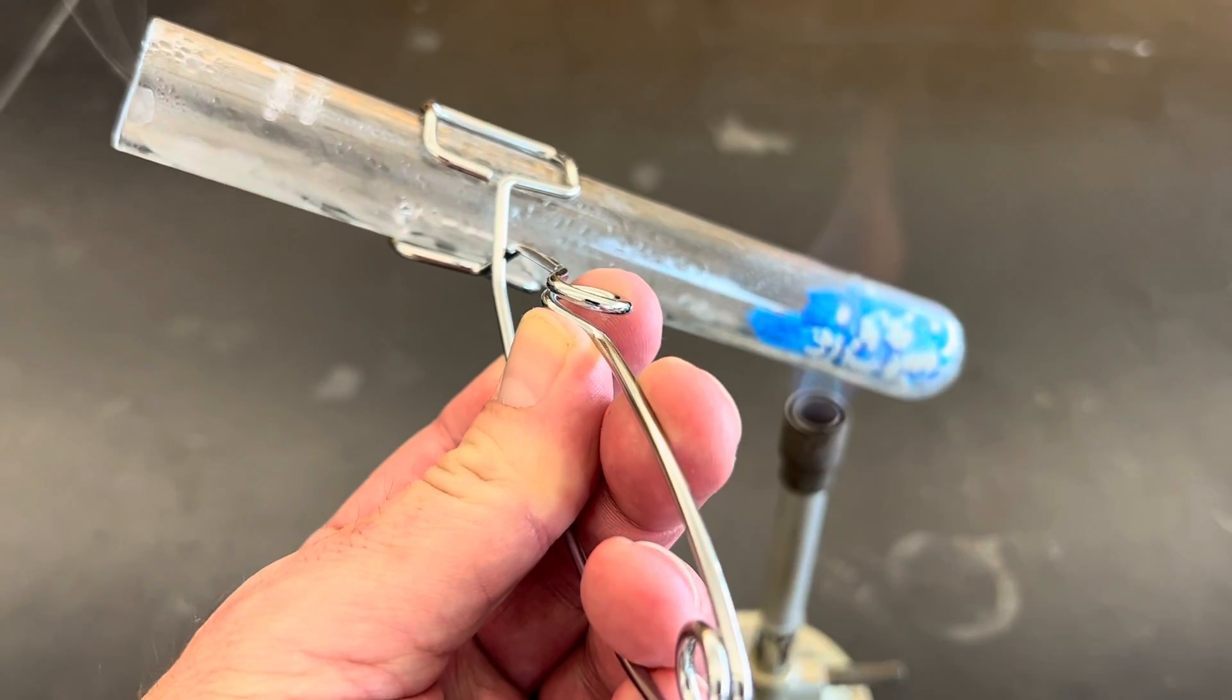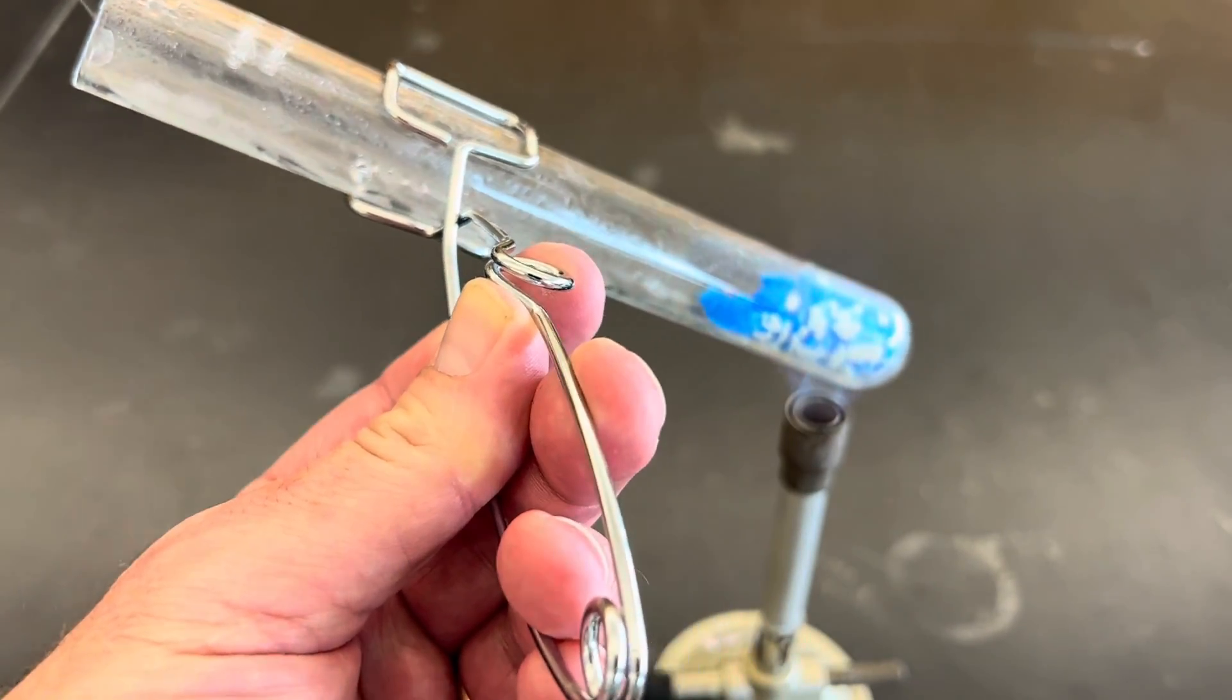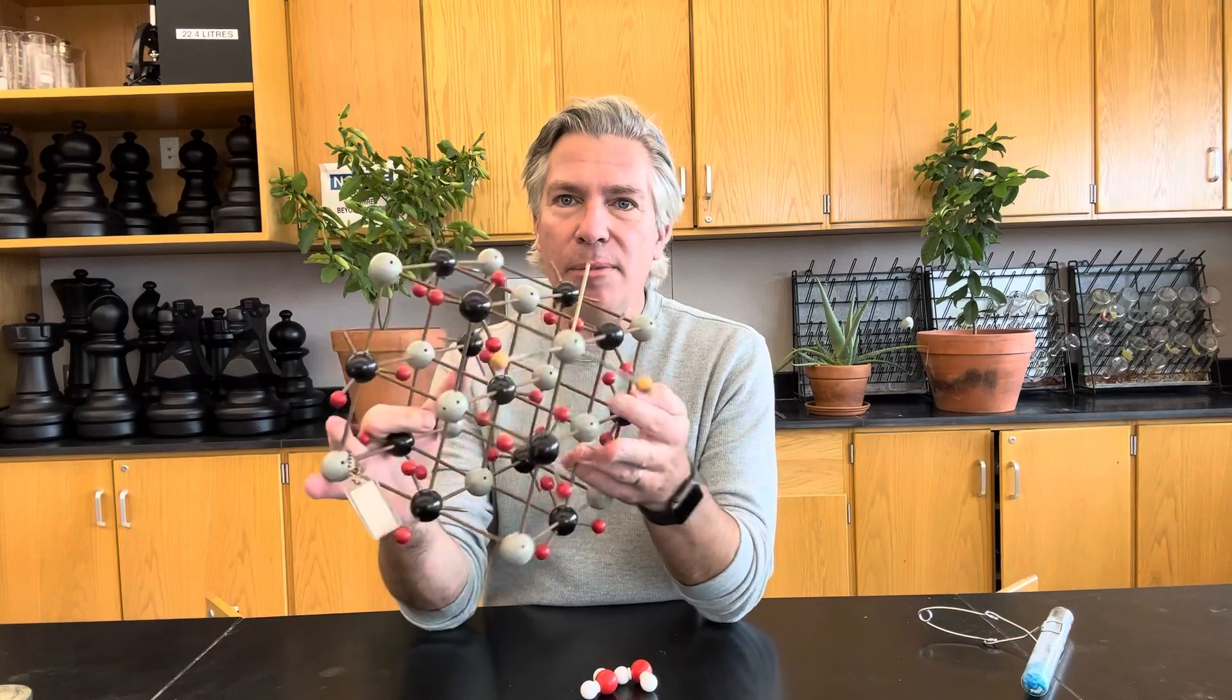And wow, there's some liquid in there. There's some condensation happening in the middle of the test tube. The only thing I added to my test tube was those crystals of copper(II) sulfate, but after I heated them I got all this condensation happening and some steam coming out the top. Where did that come from?